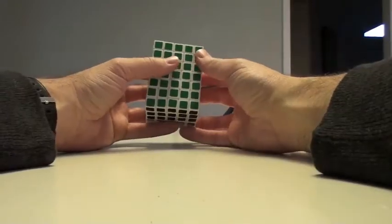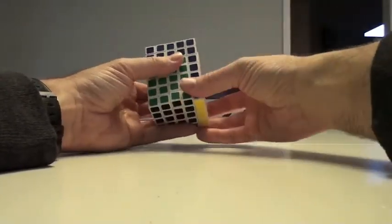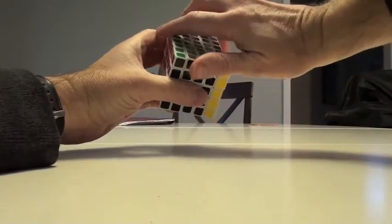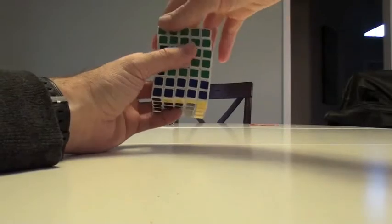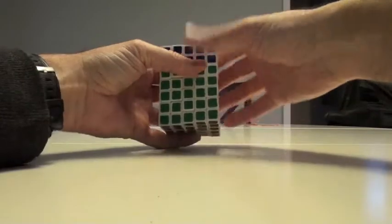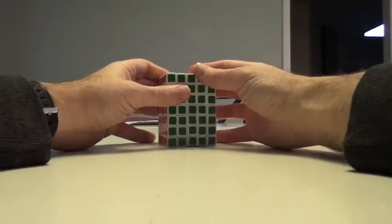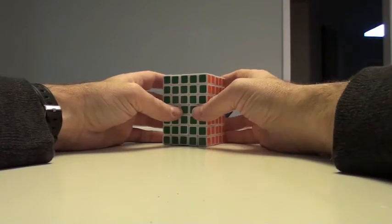So again, hold it here, do our U, R, F, so two U, two R, two F, then again two U, then do the two U up here, and then two F, two R, two U, and you have yourself a solved five by five by seven.